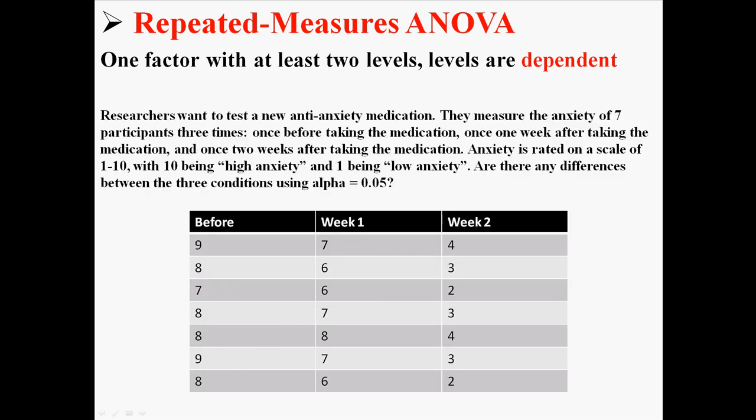Now here is my example. Researchers want to test a new anti-anxiety medication. They measure the anxiety of seven participants three times. Once before taking the medication, once one week after taking the medication, and once two weeks after taking the medication. Anxiety is then rated on a scale of 1 to 10, with 10 being high anxiety and 1 being low anxiety. Are there any differences between the three conditions using an alpha level of 0.05?